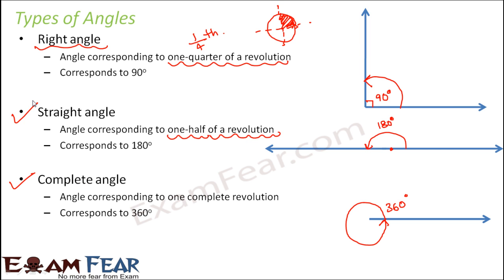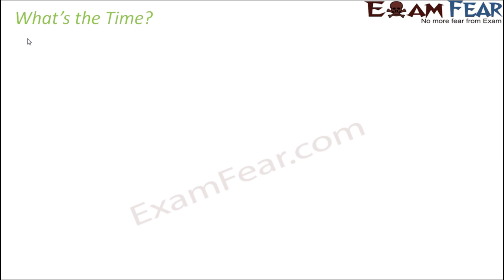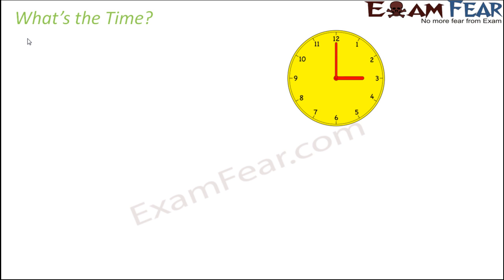To summarize: straight angle means it forms a straight line, so 180 degrees. Right angle means you covered one fourth or one quarter of the revolution, so 90 degrees. These are the three names given to three specific angles: 90 degrees, 180 degrees, and 360 degrees. Now let's take the example of a clock to see the application of each of these angles.